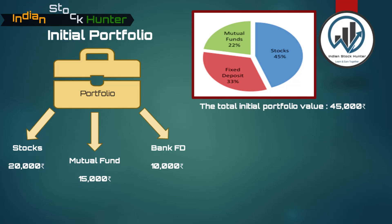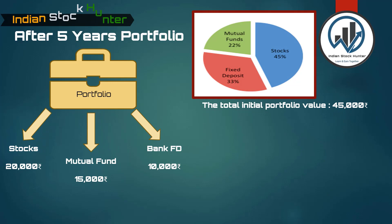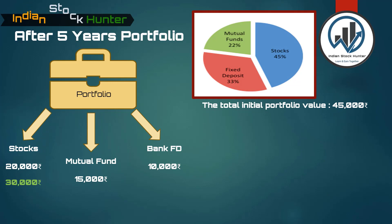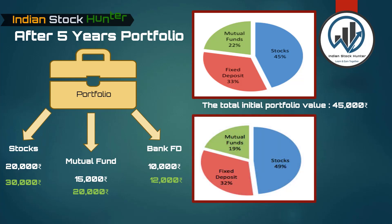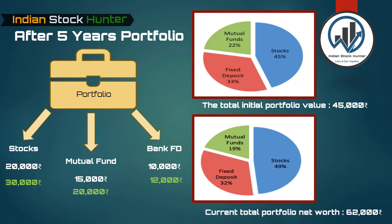Today, the same investments have grown. The value of the stocks that Mr. Amrish bought is rupees 30,000, the value of the mutual funds is rupees 20,000, and the amount in bank FD is rupees 12,000. So the current total portfolio net worth of Mr. Amrish is rupees 62,000, as shown in the second pie chart.